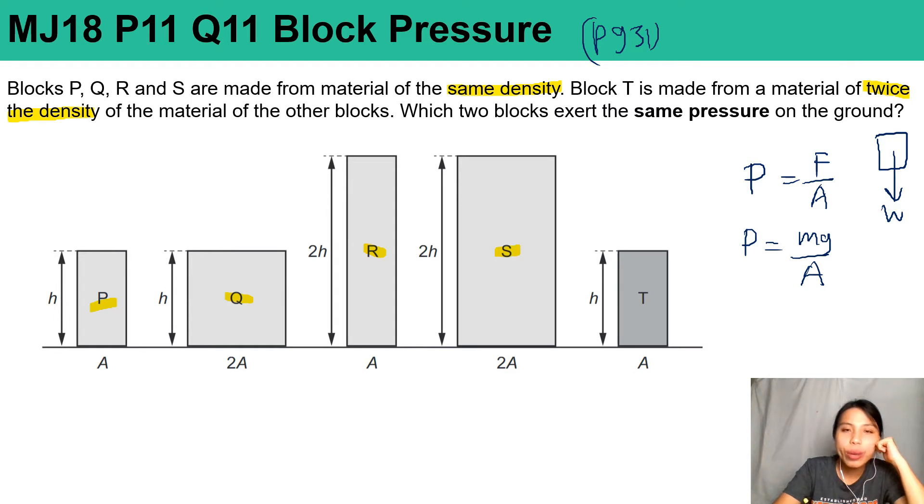Here's one way to make it more quantifiable. Let's assume that this first block has mass m. Then the pressure for this first block P is just mg over its cross-sectional area A.